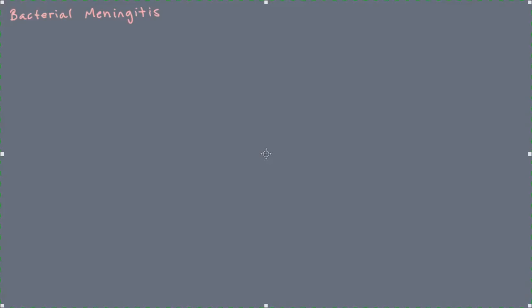What I'd like to do in reflecting on bacterial meningitis is go back to some lessons that we learned in the prudent prescribing of antibiotics from a prior video. One of the things that was mentioned as a general principle was trying to understand where the site of infection is in a child in order to pick the right antibiotics and the right management. So in this case, because I'm referring to bacterial meningitis, the question might be: what would make you think that a child has bacterial meningitis?